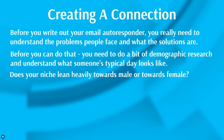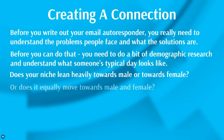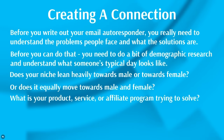The question is: does your prospect within your niche lean heavily towards male or female, or does it move equally towards both? For it to lean just towards female, that niche would be roughly 90% or 95% female. But if it's heavily towards males or females — 80% or above — then you want to jot that down. The next question is: what is your product, service, or affiliate program trying to solve?